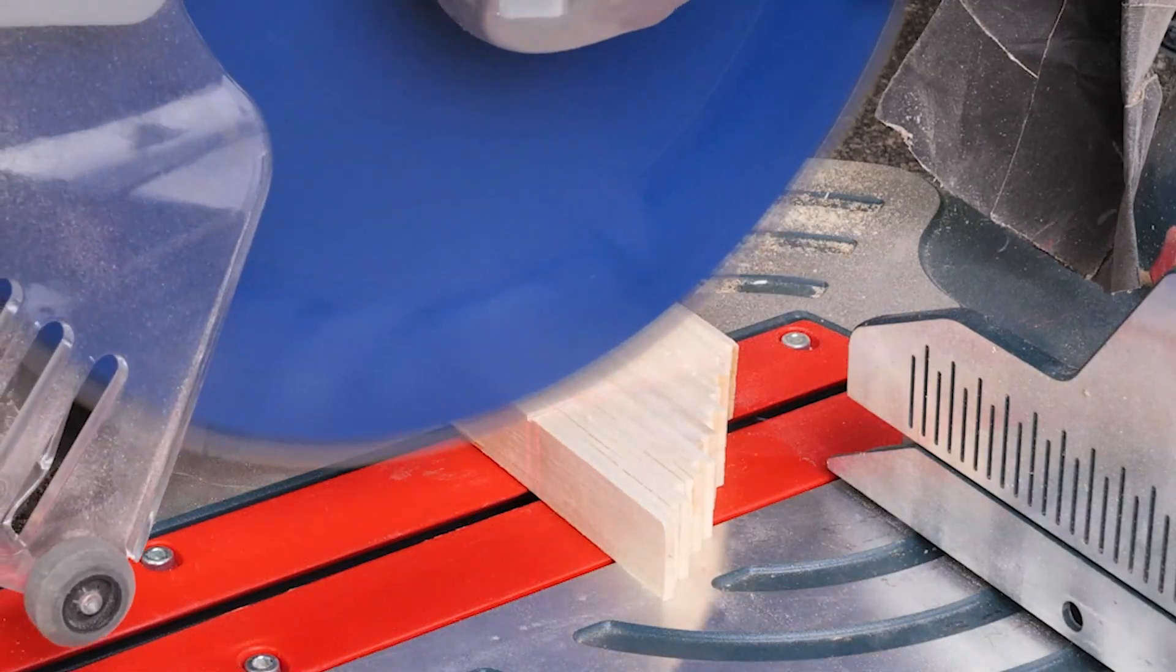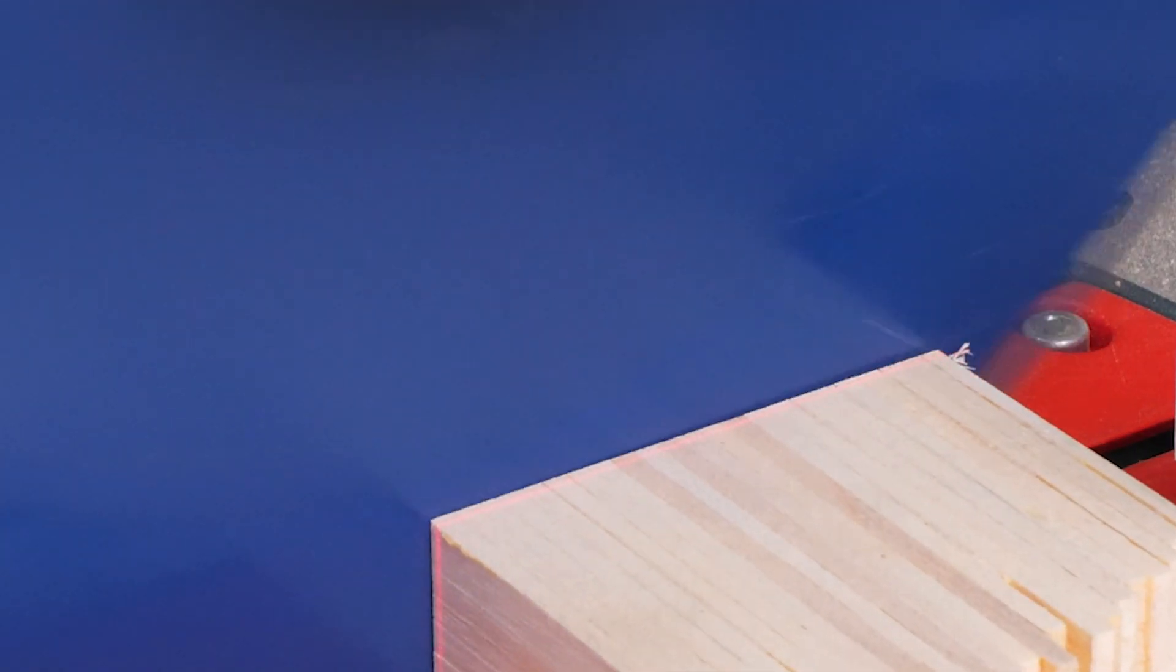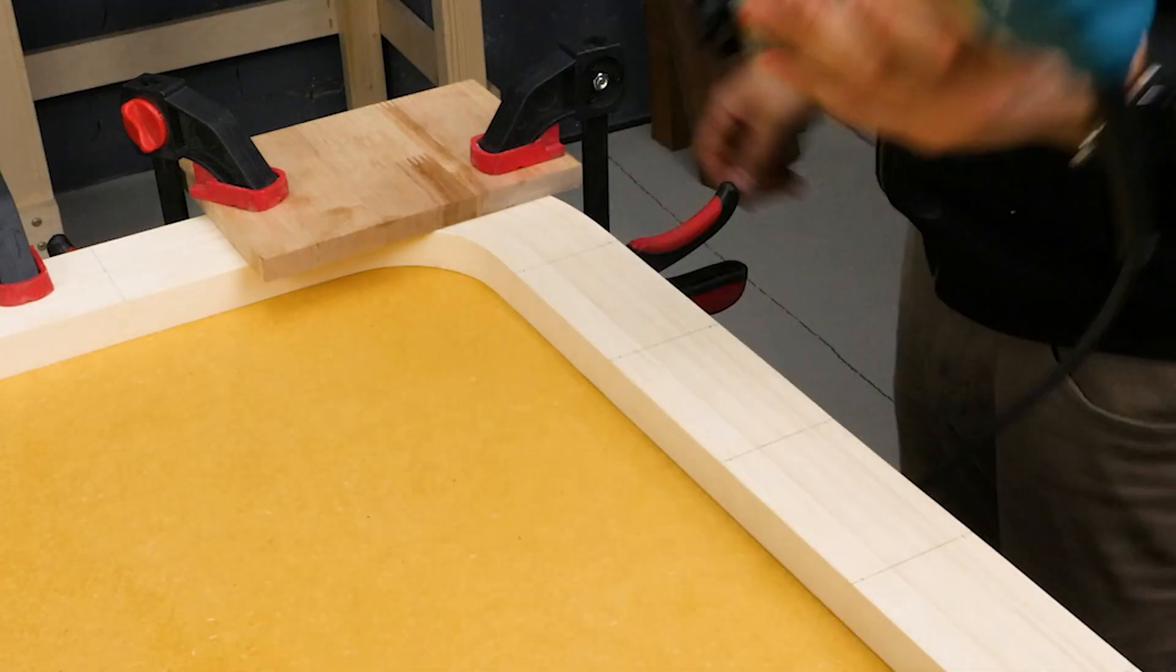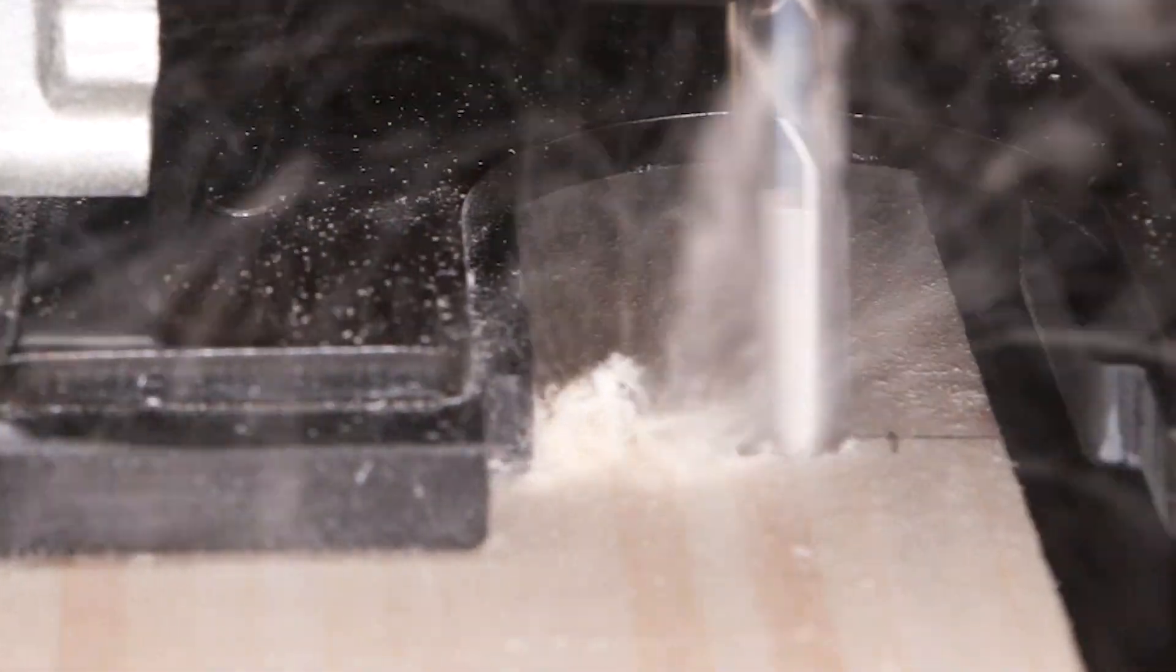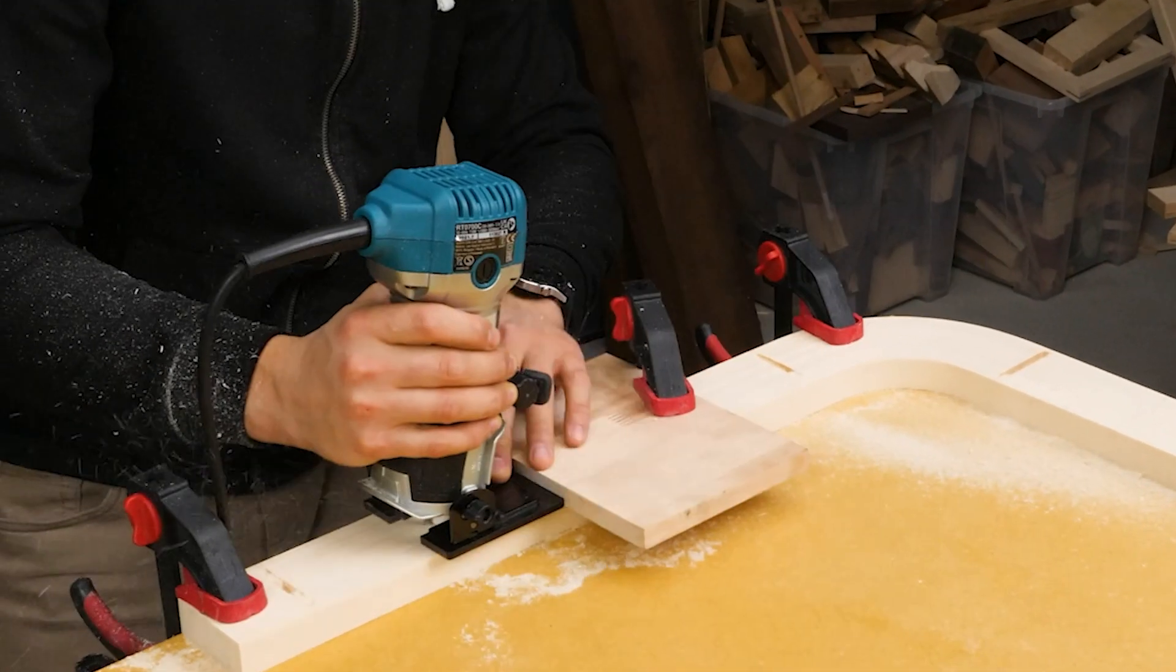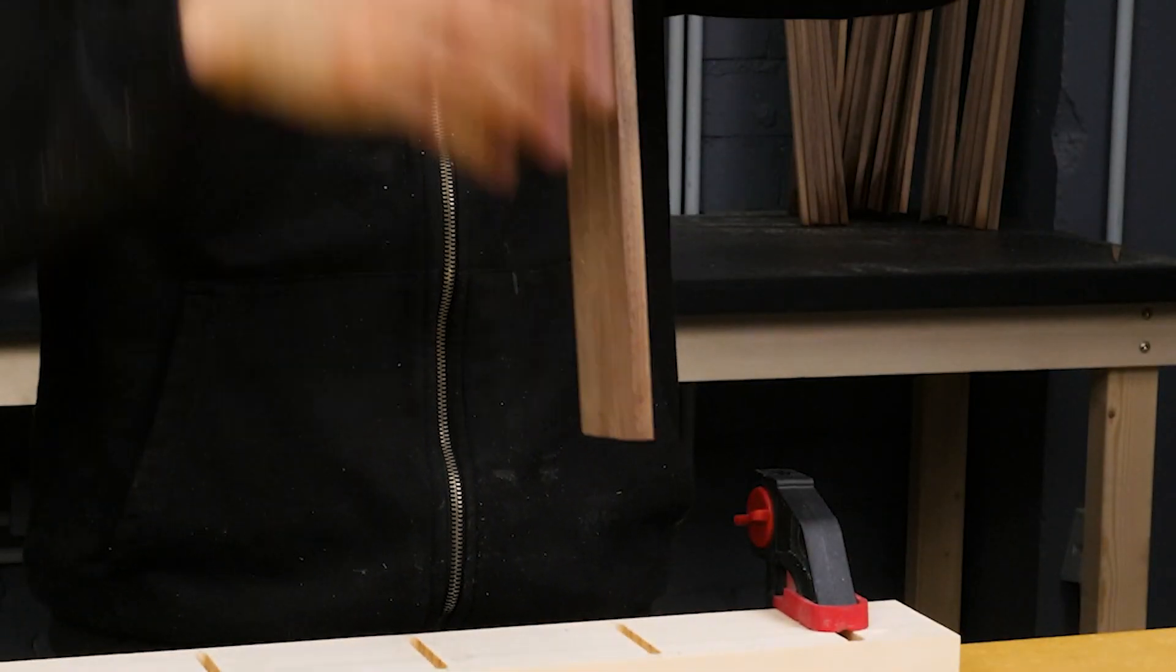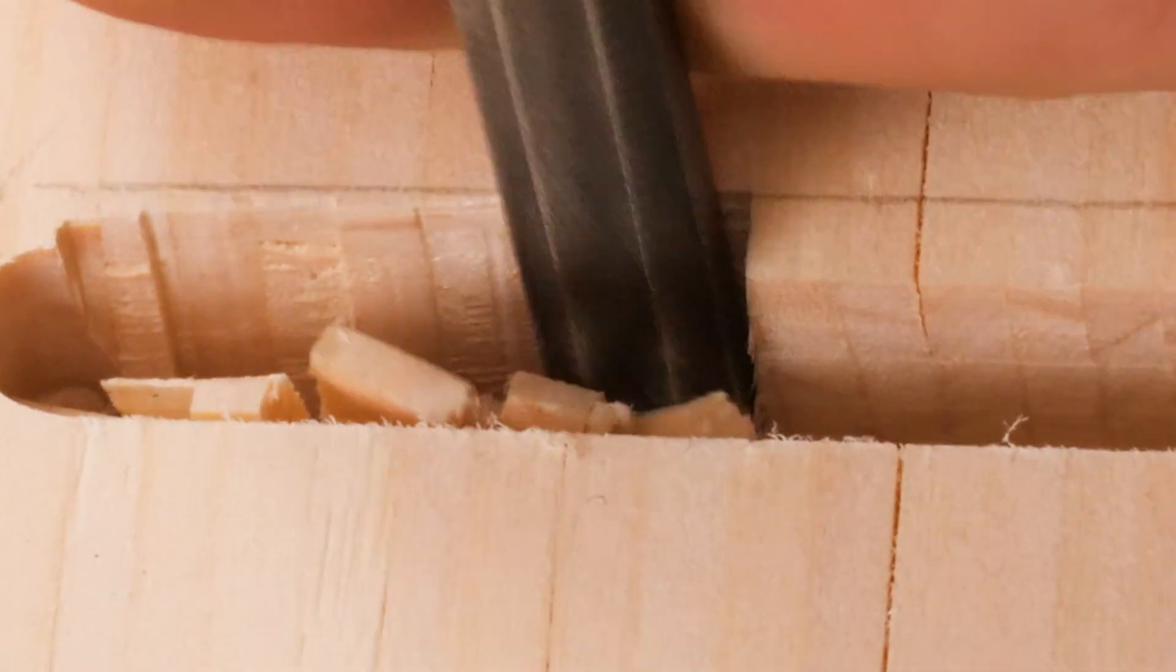Now that the bent strips are ready, I'm trimming and marking for the table legs. Time to cut out some kerfs, or slots, where the legs will snugly fit. A bit of precision with a chisel and we're good to go.